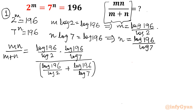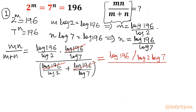In the numerator, you can see that terms like log 196 will get cancelled out. Taking the LCM in the denominator — making a common denominator — log 2 times log 7 from the numerator's denominator will get cancelled out. So the expression simplifies to: log 196 squared over log 196, divided by (log 7 plus log 2) over (log 2 times log 7), which becomes (log 2 plus log 7) over (log 2 times log 7).